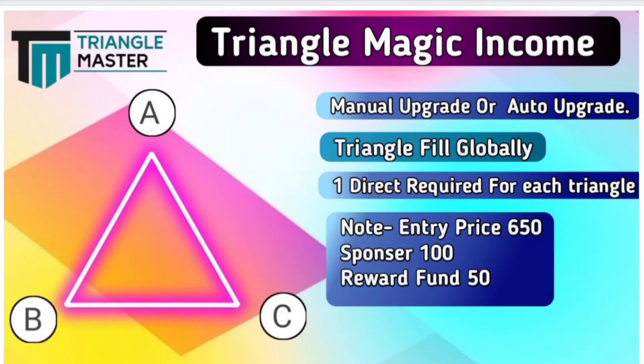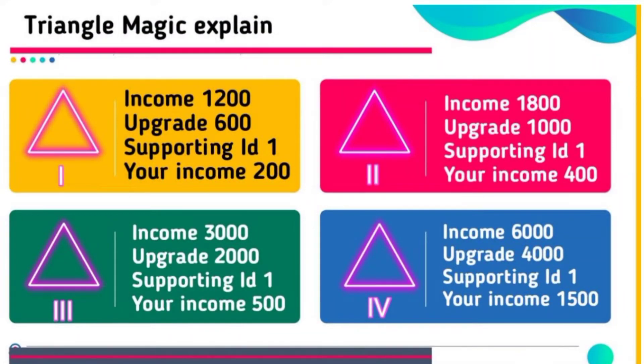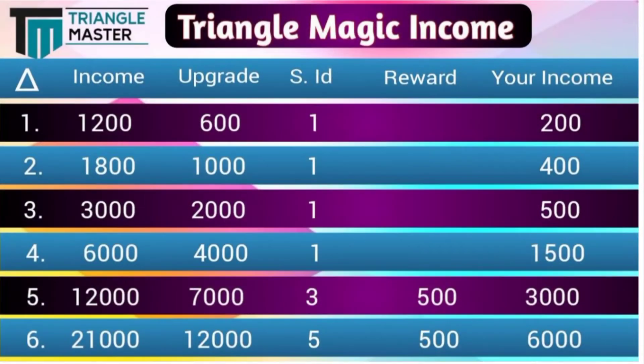Our most attractive income is Tringle magic income. You can upgrade your ID manually or it will be auto-upgraded. Tringle magic income fills globally. Remember, one direct is required for each level. Entry price is $7.50 or 650 Indian rupees. Sponsor gets $1.16 or 100 Indian rupees, and the reward fund is 50 cents or 50 Indian rupees. You can see the details on screen — your income is 1,200 Indian rupees and upgrade amount is 601 Indian rupees. Direct sponsor is compulsory and your income is 200 Indian rupees.